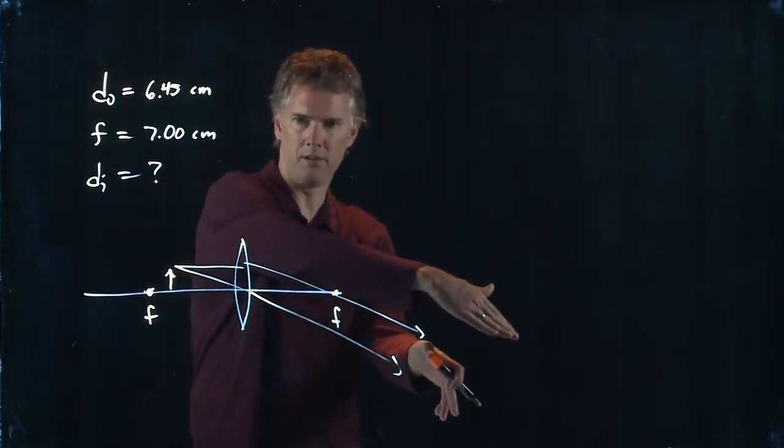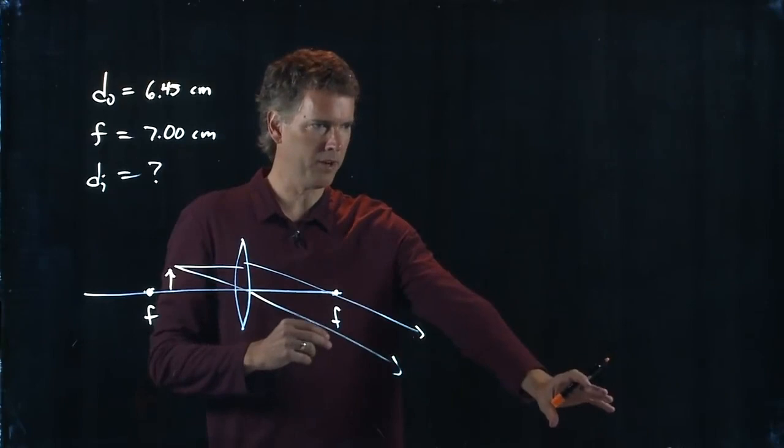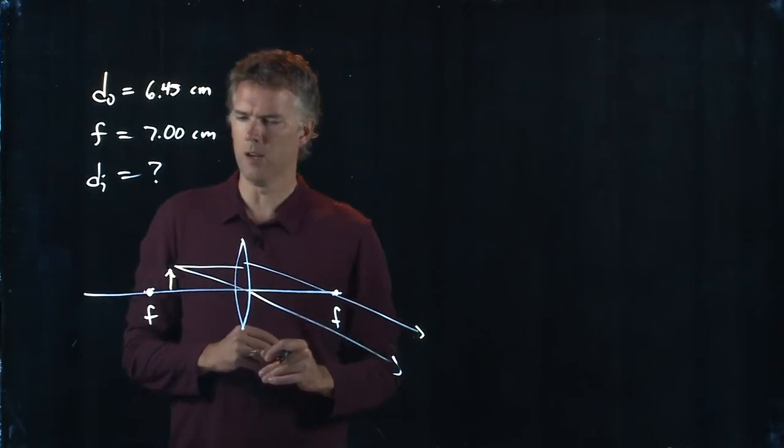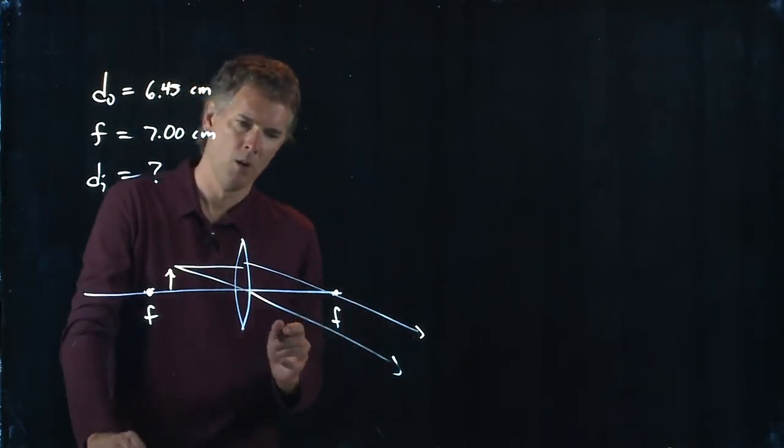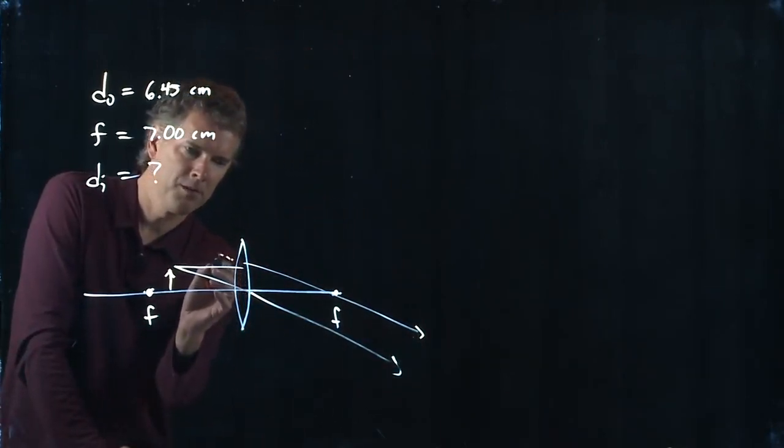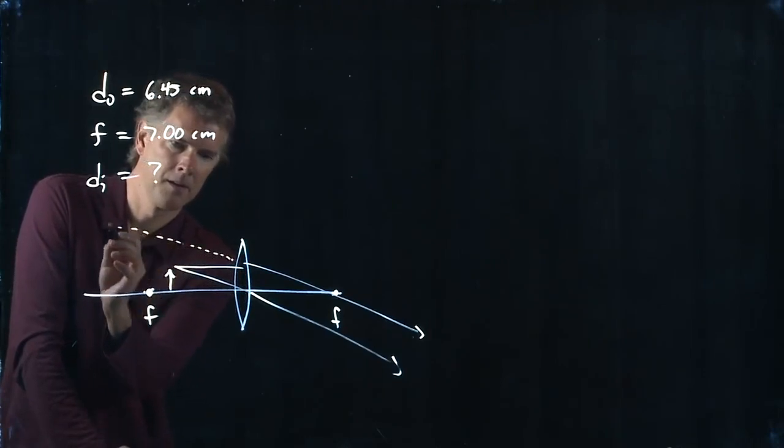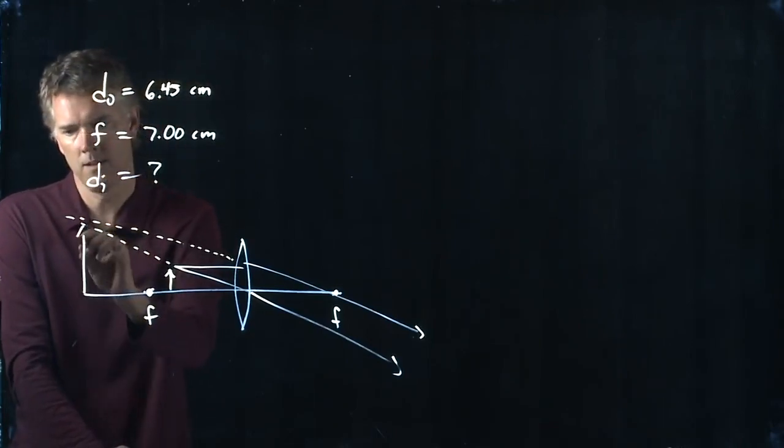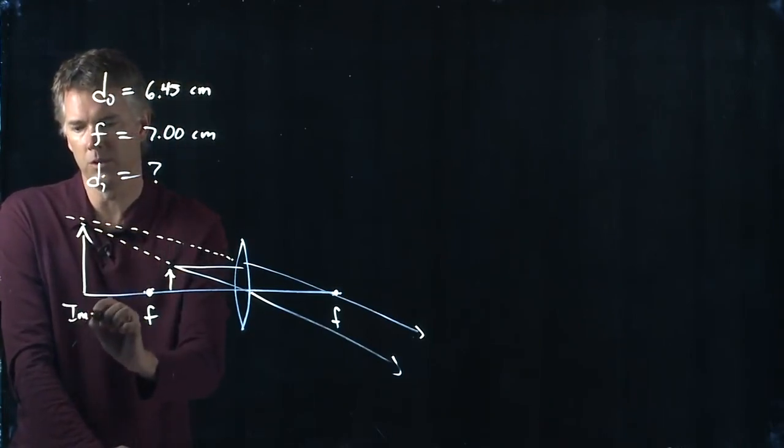They are diverging still. So they're never gonna meet over here. So there cannot be an image located on this side. Alright, so how do we determine the image? Well, you trace this one back, you trace this one back, and where they meet, that's where the image is located.